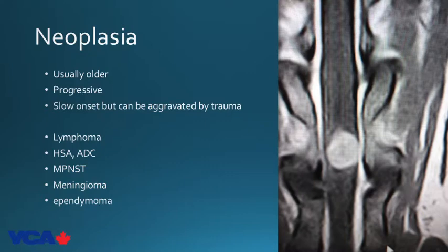Neoplasia: a recent case showed a hyperintense intramedullary lesion post-contrast on T1 at C4 in a seven-year-old Shepherd. Cancer should be on the differential list for dogs four years and older. This case had progressive disease over about eight months with slow onset, aggravated by trauma. Tumor differentials for spinal cord include hemangiosarcoma, adenocarcinoma, lymphoma, malignant peripheral nerve sheath tumor, meningioma, and ependymoma — which is the rarest.